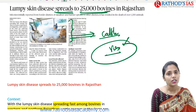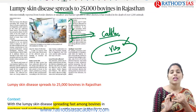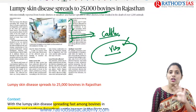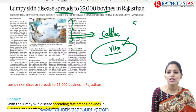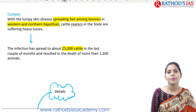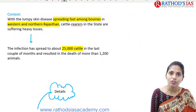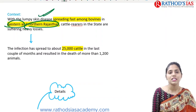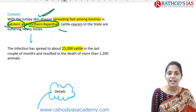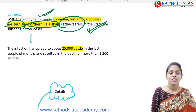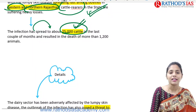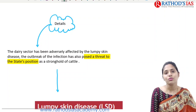The spread of lumpy skin disease is seen in India, especially in Northern and Western Rajasthan, spreading very fast among bovines — cattle. Because of this, cattle rearers in Rajasthan are suffering heavy losses. The infection has spread to about 25,000 cattle in the last couple of months, and about 1,200 cattle have died. This has led to heavy losses for these cattle rearers.